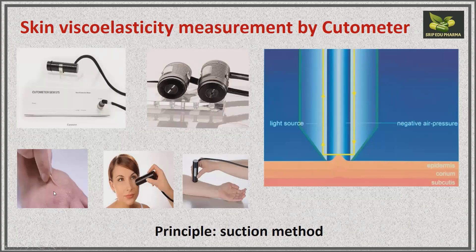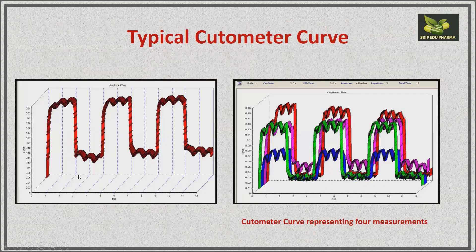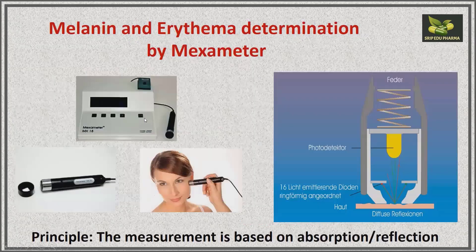With the cutometer, skin viscoelasticity of any body part can be observed. A light source is used and negative air pressure is applied, causing the epidermis to be sucked inward, allowing you to observe the elasticity and firmness of the skin. This is the typical cutometer curve obtained by the instrument — four measurements produce four curves, and readings are also available in an Excel sheet.